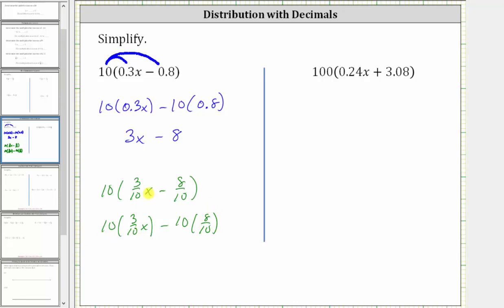And we can write 10 as a fraction with the denominator of one. Now before multiplying, we simplify out the common factors between the numerators and denominators. Notice here we have a common factor of 10.